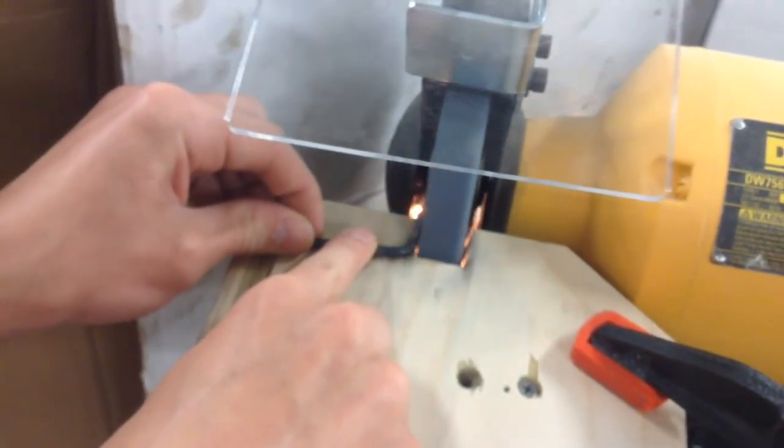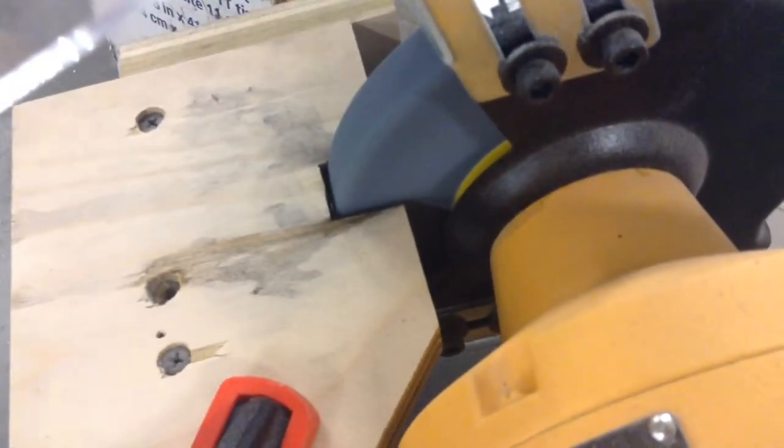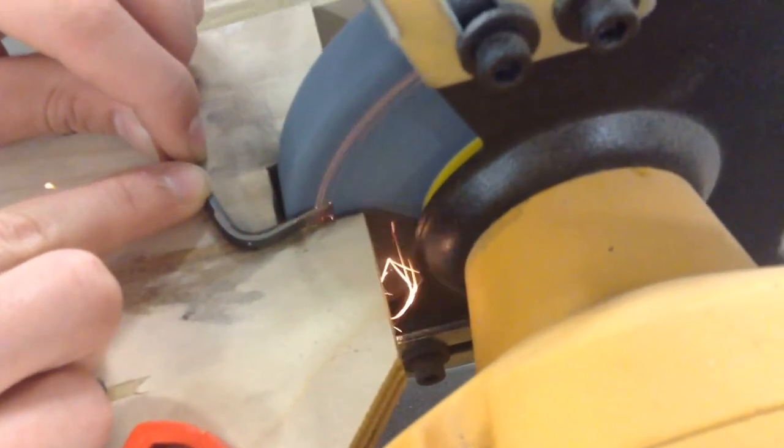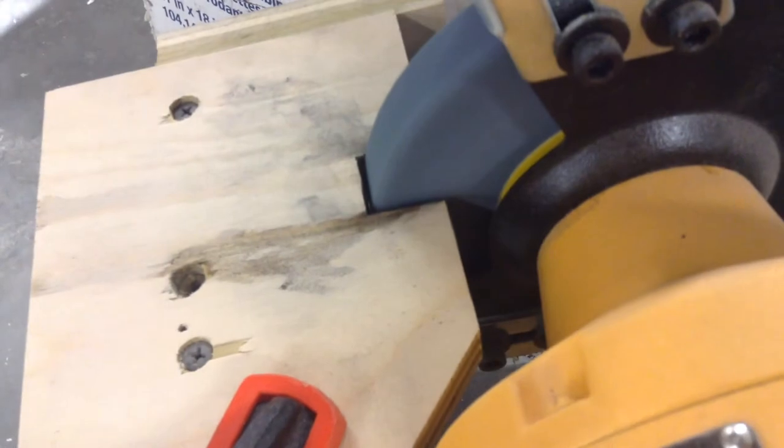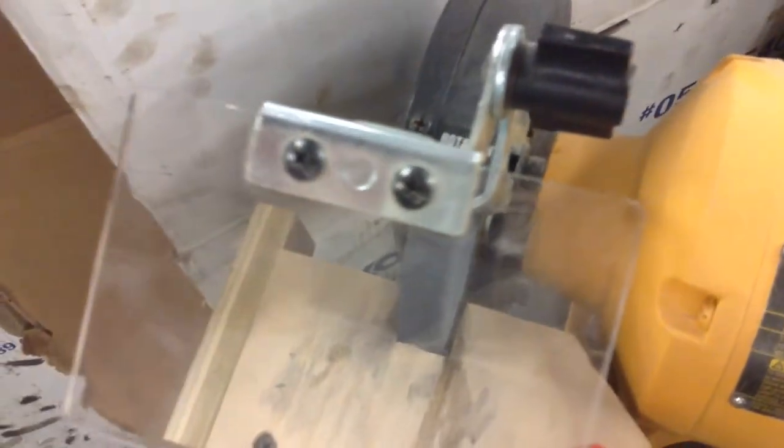So next what I'm going to do is switch over. I've already done the sides as you can see, but now I'm going to go over and do the angle. And the angle's not too critical. Just make sure that it's a decent angle, something like a chisel that you may have in your workshop already.